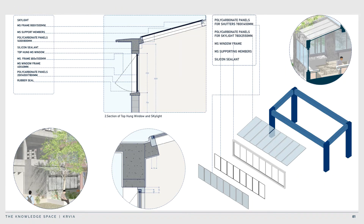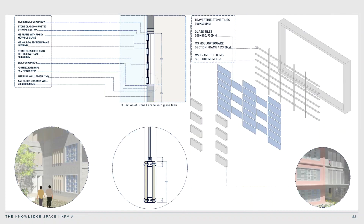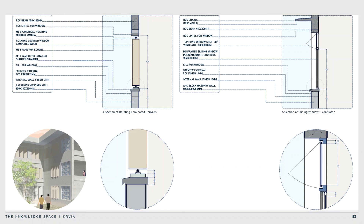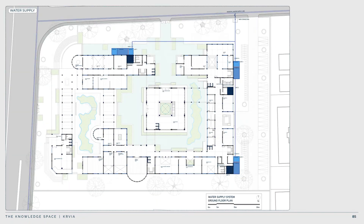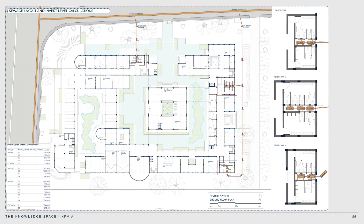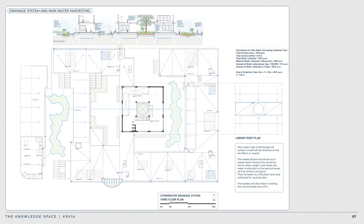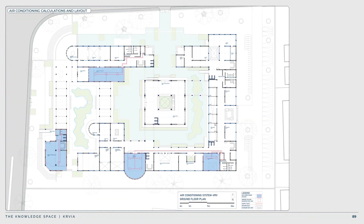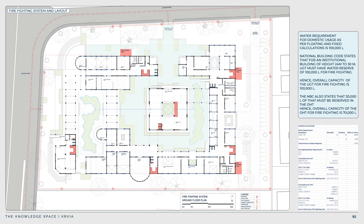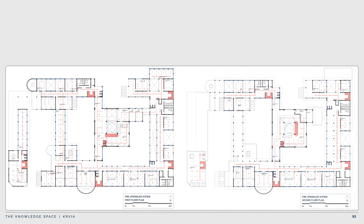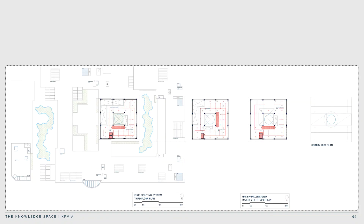Wall section CC details bio-filters in the courtyards with permeable pavers that recharge groundwater and carry overflow into filtration tanks for landscape use. It also details the connection of the glass funnel using cylindrical mild steel sections and spider clamps. Window details include a rotating terracotta fin system with sliding window, a staggered window unit with top-hung window and skylight, stone tiles riveted onto mild steel box sections, rotating laminated louvred windows, and a sliding window with ventilator. Water calculations cover OHDs and GTs for three toilet blocks, water supply system, sewage layout and invert level calculations. Stormwater collected from terraces and surface runoffs is directed into swales, filtered, and repurposed for landscaping. Air conditioning, firefighting, sprinkler layouts, and heat and smoke detectors are also included.